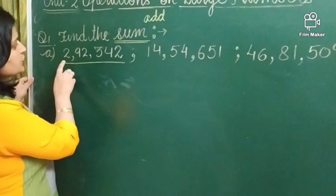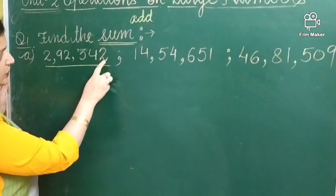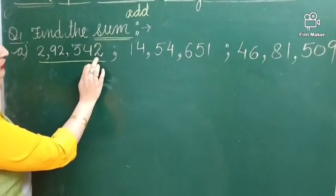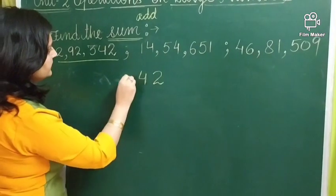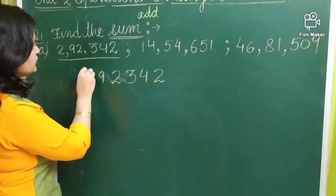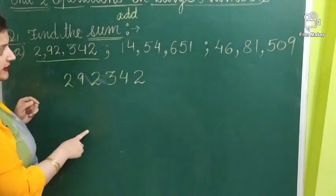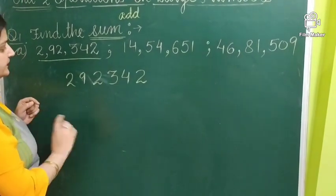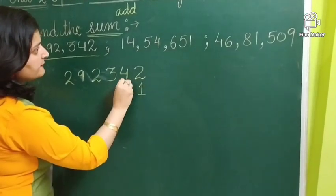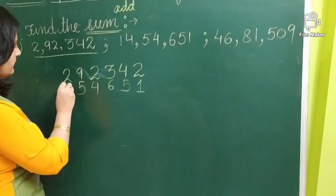The first number is 2,92,342. So, whenever you write this number, you write it from once place. 2, 4, 3, 2, 9 and 2. This time when you are arranging these numbers vertically, no need to apply commas. Now, the second number. Again, you have to write it from once place. 1, 5, 6, 4, 5, 4.